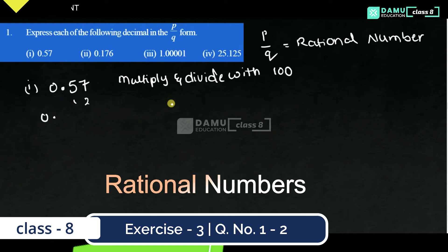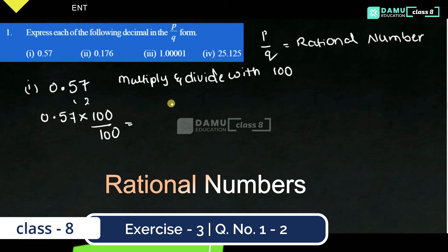So, 0.57 into 100 by 100. After the decimal, how many places are there? 2 places. For that, 2 zeros — we need to add 1. So, 57. Therefore, 0.57 equals 57 by 100.